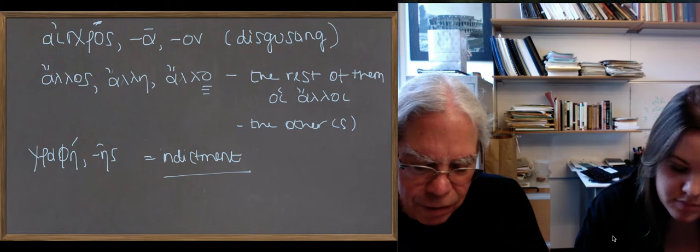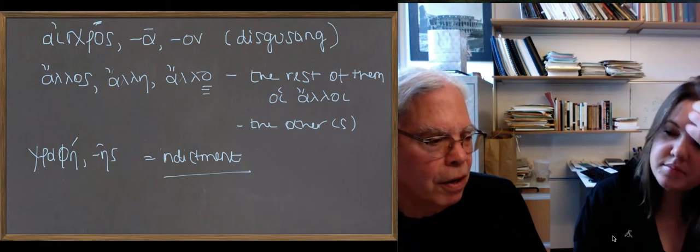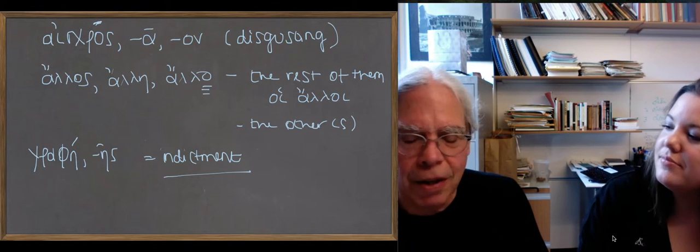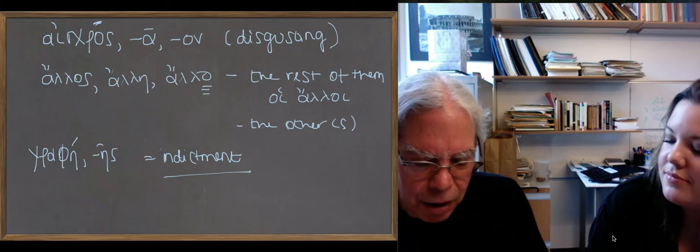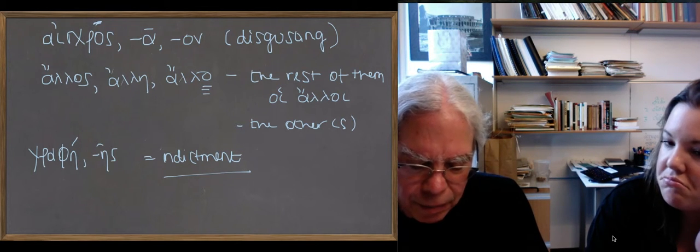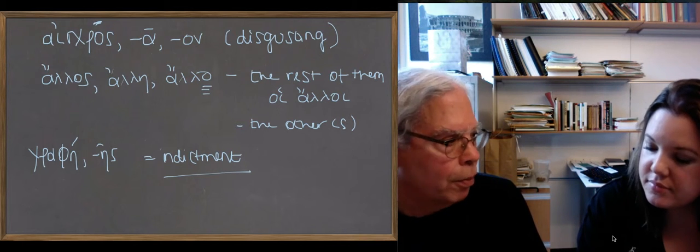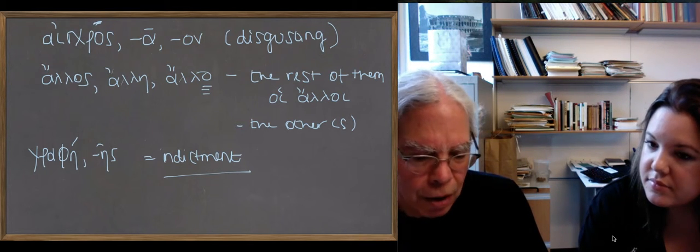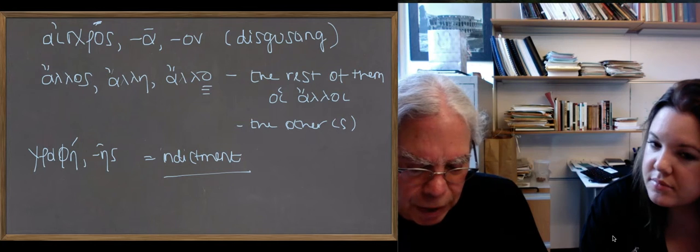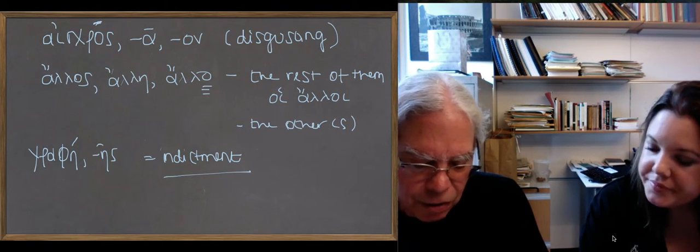Now we get the adjective delos, dele, delon, which has, as far as I know, no cognates in English. Funny word, a very common word in Greek that means clear or visible. Delos, dele, delon. It has a negative form adelos, adelon, a compound form. Notice it has only two forms, one both masculine and feminine, adelos, and one neuter, adelon. That means unclear or uncertain.